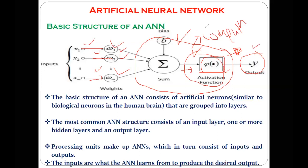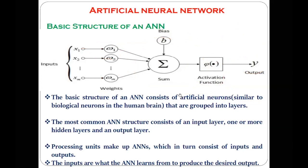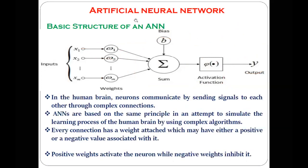Let's see some details regarding this. Just like in the human brain, neurons communicate by sending signals to each other through complex connections — as we saw yesterday — in a similar way, artificial neural networks are based on the same principle. In the biological neurons, they communicate by sending signals; on the same principle, ANN is based.